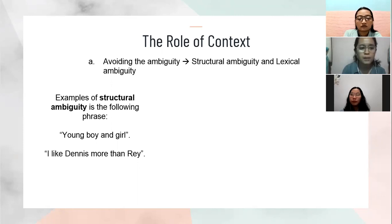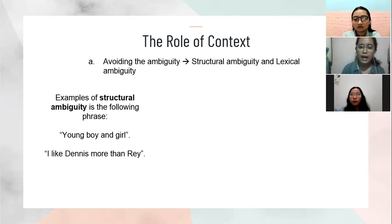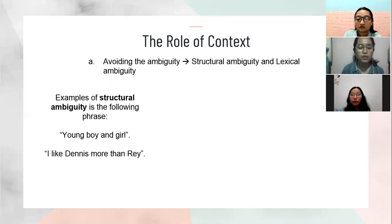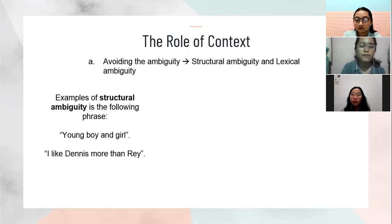Here is the example of structural ambiguity. The first phrase is 'young boy and girl.' Without context, there are two possible meanings: either a young boy and a girl who is not young, or both the boy and the girl are young. Another example is 'I like Dennis more than Ray.' Without context, there are two possible meanings: 'I like Dennis more than I like Ray,' or 'I like Dennis more than Ray does.' Structural ambiguity mostly occurs from grammatical analysis. However, the role of context is really important to avoid structural ambiguity.